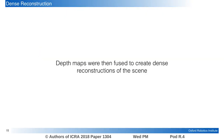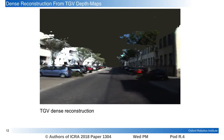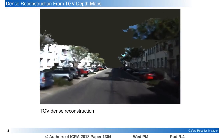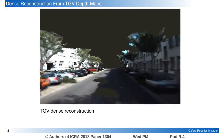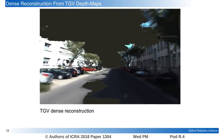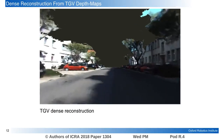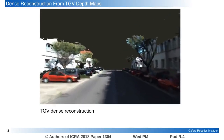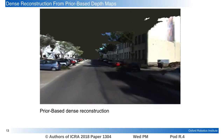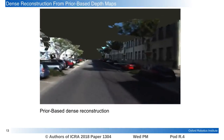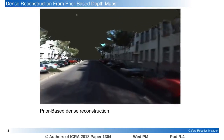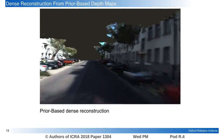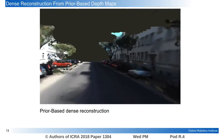To evaluate our work more rigorously, we used the depth maps to create a dense reconstruction. The dense reconstruction from the TGV depth maps showed noise in the buildings and missing sections in the road. The prior reconstruction shows more coverage and cleaner walls in the reconstruction without reducing the accuracy.